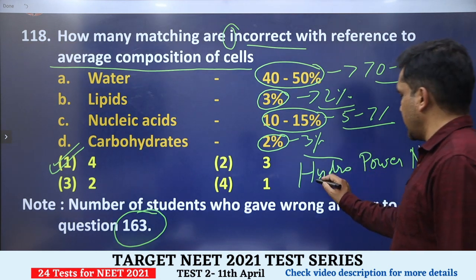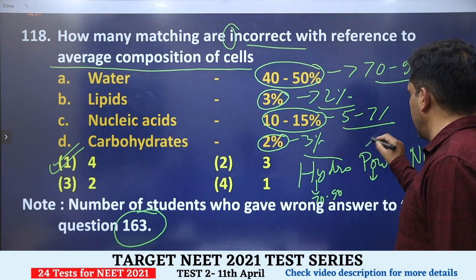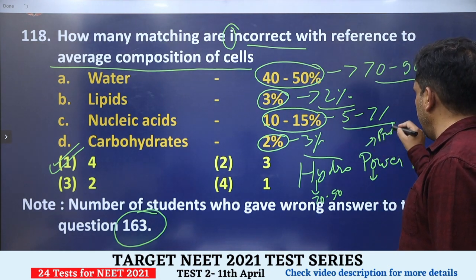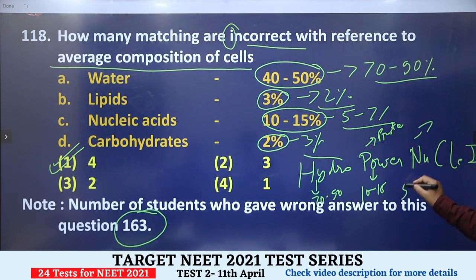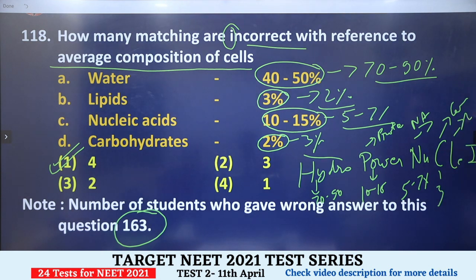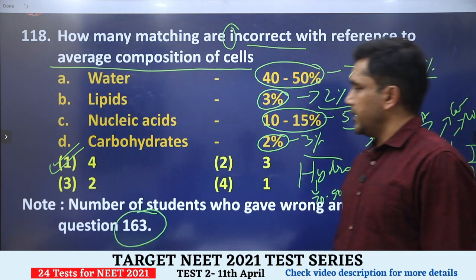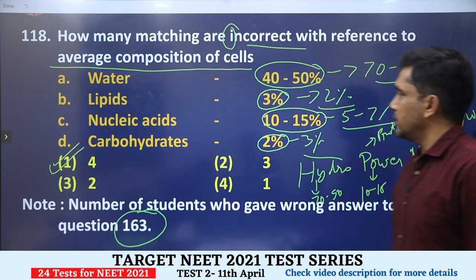So the correct answer is option one — all four matchings are incorrect. For those who have difficulty remembering the sequence, here is a mnemonic: HYDRO POWER NUCLEI C L. Hydro = water (70-90%), Power = protein (10-15%), Nuclei = nucleic acid (5-7%), C = carbohydrates (3%), L = lipids (2%), and ions (1%). This chart is given in the biomolecules chapter.